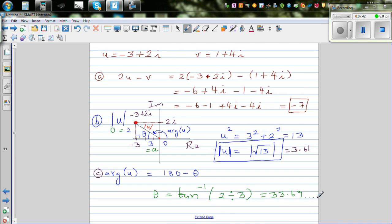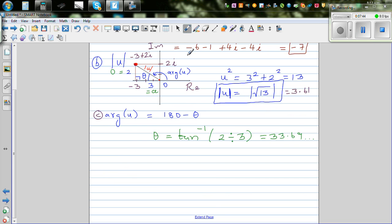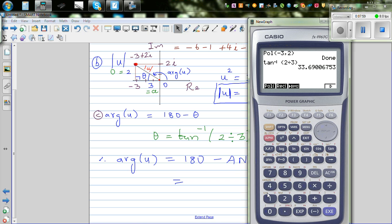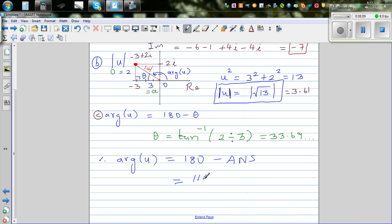Therefore, argument of u would be 180 minus this answer. Let's do it: 180 minus shift answer, which is 146.309. That's what we got: 146.31.